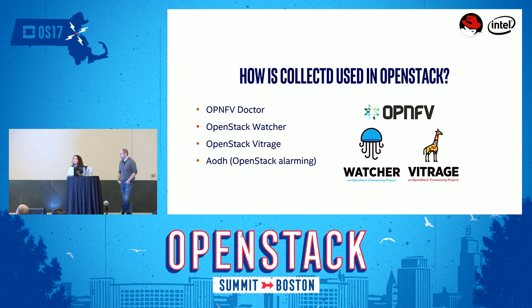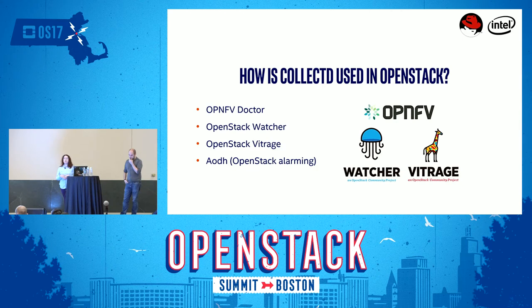Then there's the OpenStack Watcher project, which is infrastructure optimization. It analyzes workloads and determines their efficiency, then moves them into more efficient locations. They actually have a demo in the Intel booth in the marketplace. They're using RDT — Intel Resource Director Technology — to detect when cache utilization is interfering with the workload. So when one application starts using all the system resources, they detect and failover in that case.